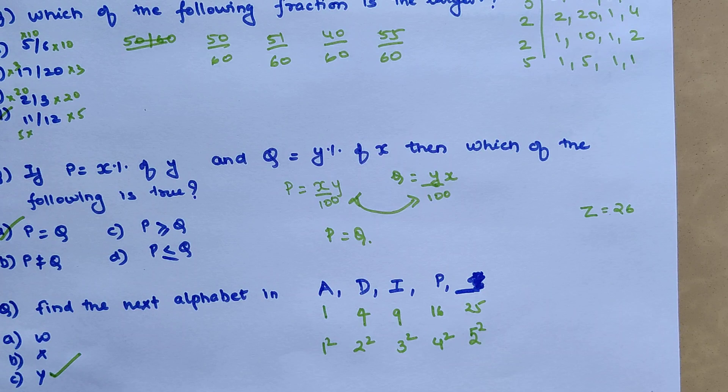Here what you should have is five square which will be 25, and 25 will be the Y letter. So option C is my correct answer.